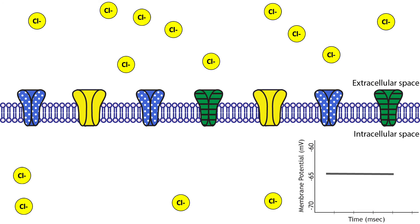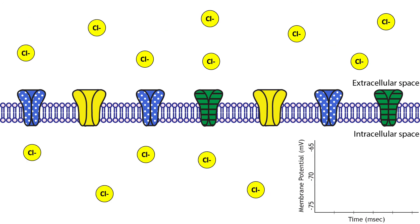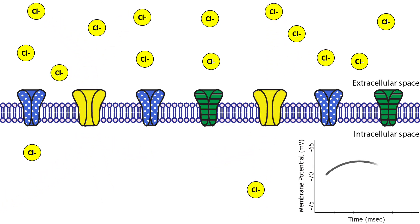Increased chloride conductance would make it more difficult for the cell to depolarize and to fire an action potential. If the resting membrane potential of the cell was more negative than chloride's equilibrium potential — for example, at negative 70 millivolts — then chloride would leave the cell in order to move the membrane potential toward negative 65 millivolts. This would result in a depolarization of the membrane potential. However, the overall effect is still inhibitory, because once the cell reaches negative 65 millivolts, the driving forces acting on chloride would try to keep the cell at that membrane potential, making it more difficult for the cell to depolarize further and fire an action potential. A good rule of thumb is to remember that opening sodium channels is excitatory, whereas opening chloride channels is inhibitory.